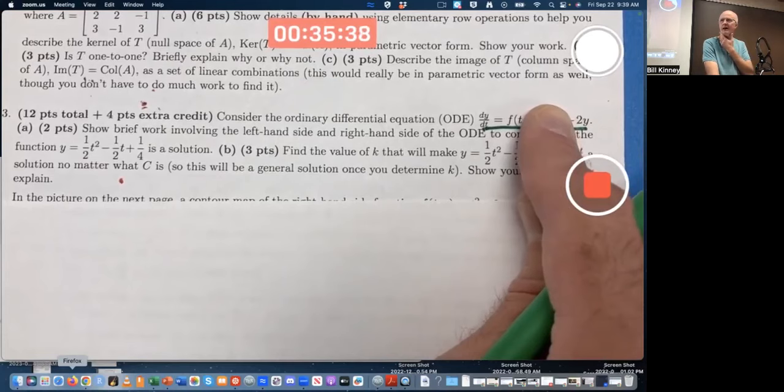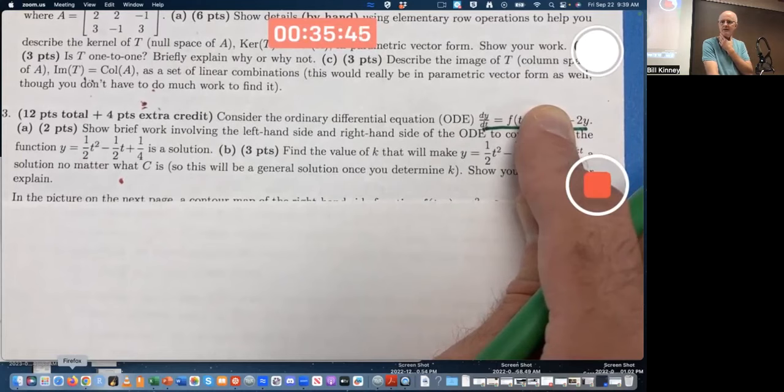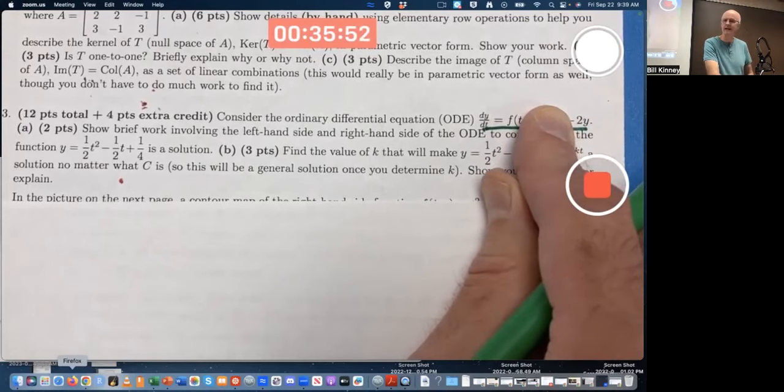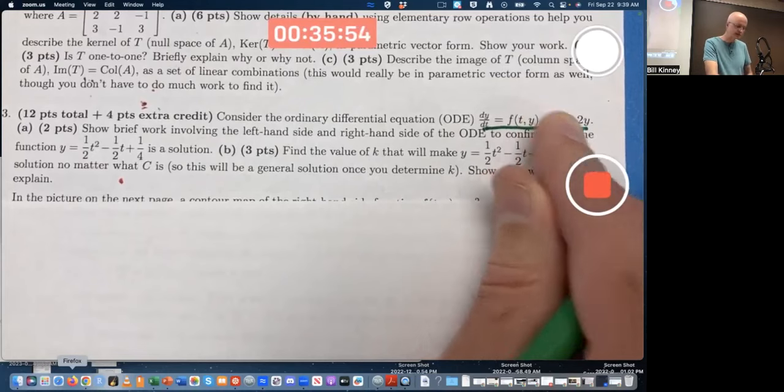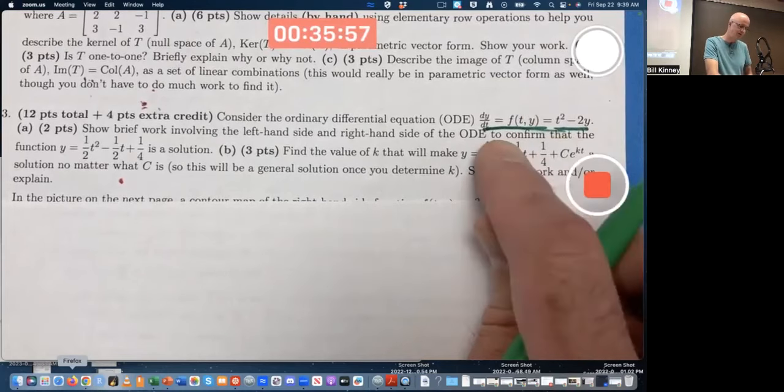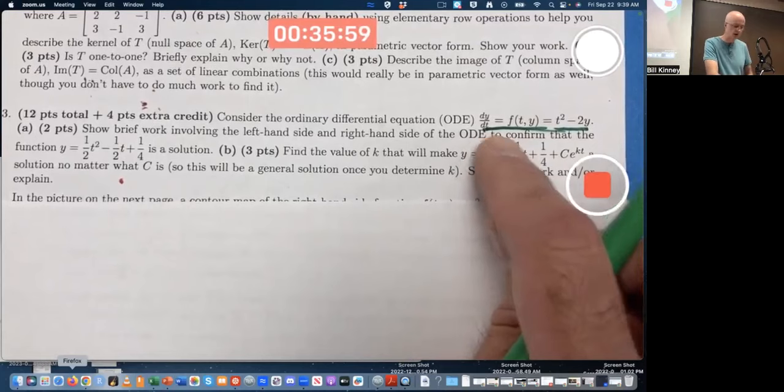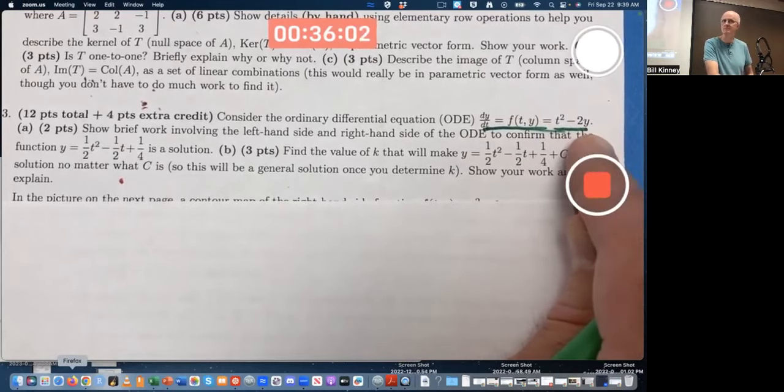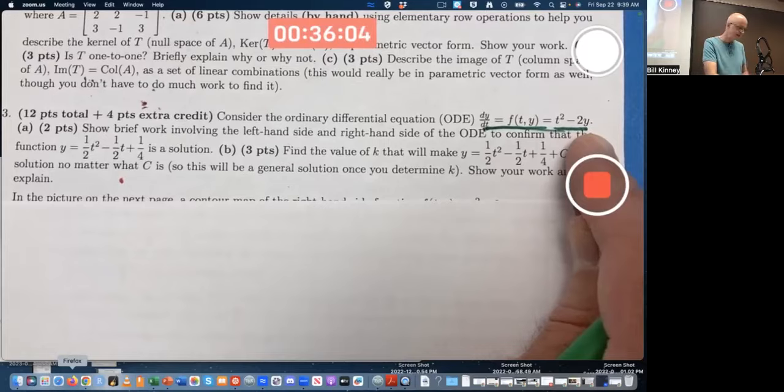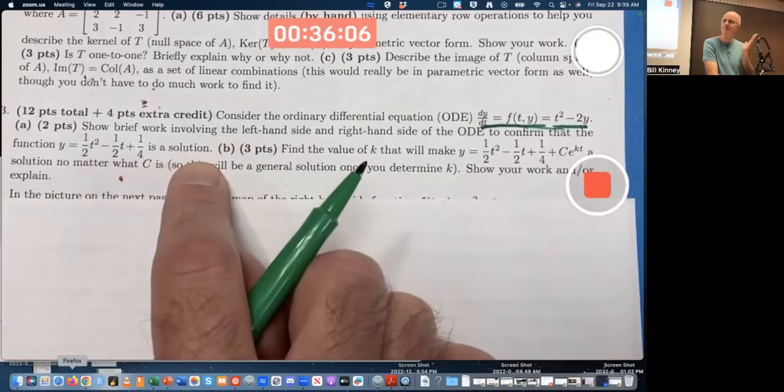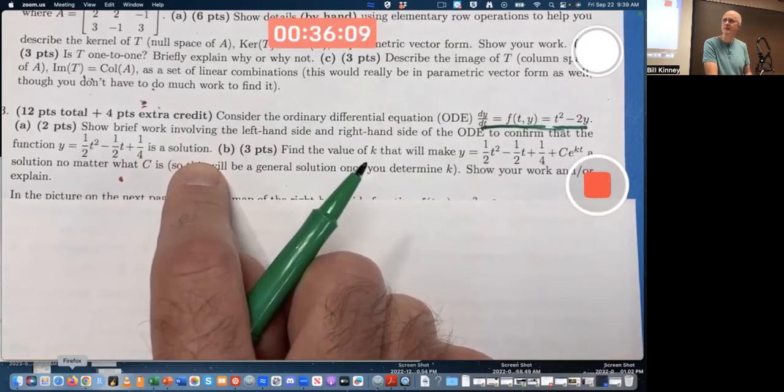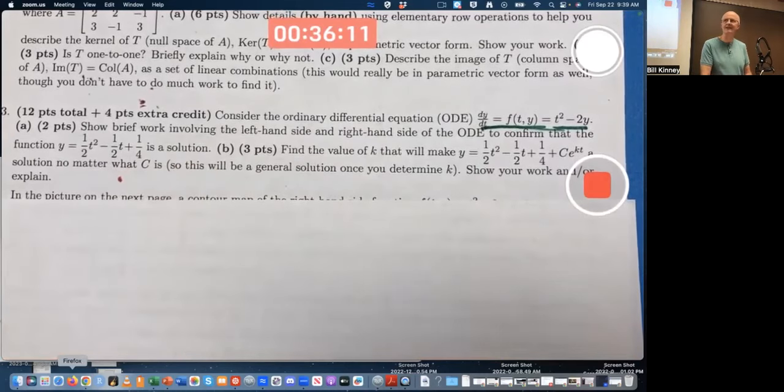If it were just a negative 2y, that would be also relatively easy. Separation of variables would work. You could also just guess if dy/dt is negative 2y, the general solution would be c times e to the negative 2t. Function would have a derivative equal to negative 2 times itself. But this is more complicated, both t and y. We're after a function whose derivative with respect to t is always t squared minus 2 times the function. This function is one function that works. And part A was all about checking that that works.